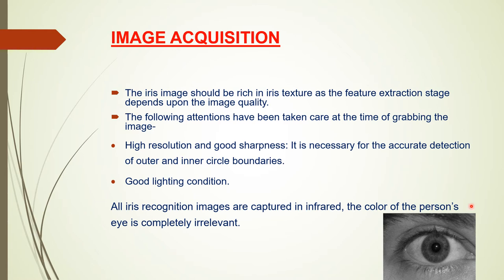Image acquisition: the eye image is captured in the presence of infrared light, so the color of the iris doesn't matter at all — it is irrelevant. Certain points should be kept in mind during image acquisition: the iris image should be rich in eye texture, as the feature extraction stage depends upon image quality. Therefore, high resolution, good sharpness, and good lighting conditions are required. High resolution and good sharpness are necessary for accurate detection of outer and inner circle boundaries, and good lighting conditions help in removing noise to a certain extent.